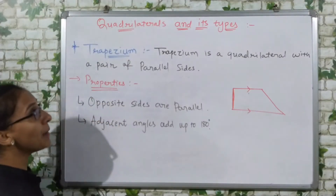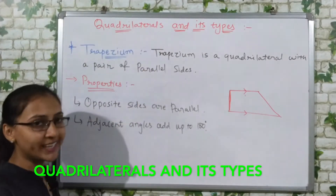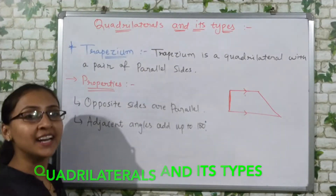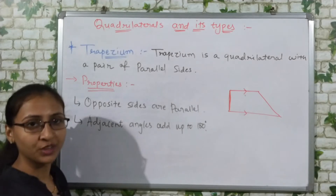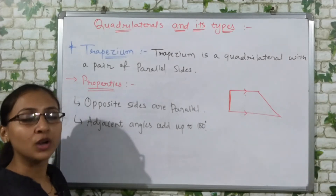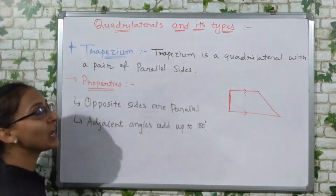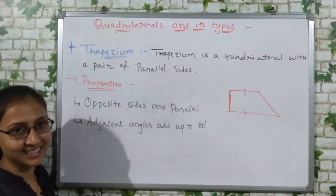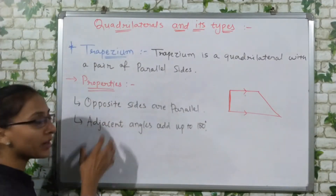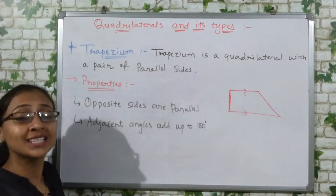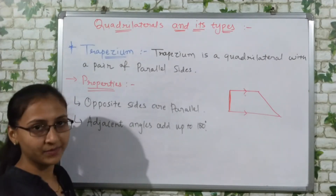Here we have quadrilaterals. We studied that quadrilaterals are nothing but four-sided polygons. If any polygon has four sides, then we will call it a quadrilateral. But we can also divide them according to their properties and characteristics.